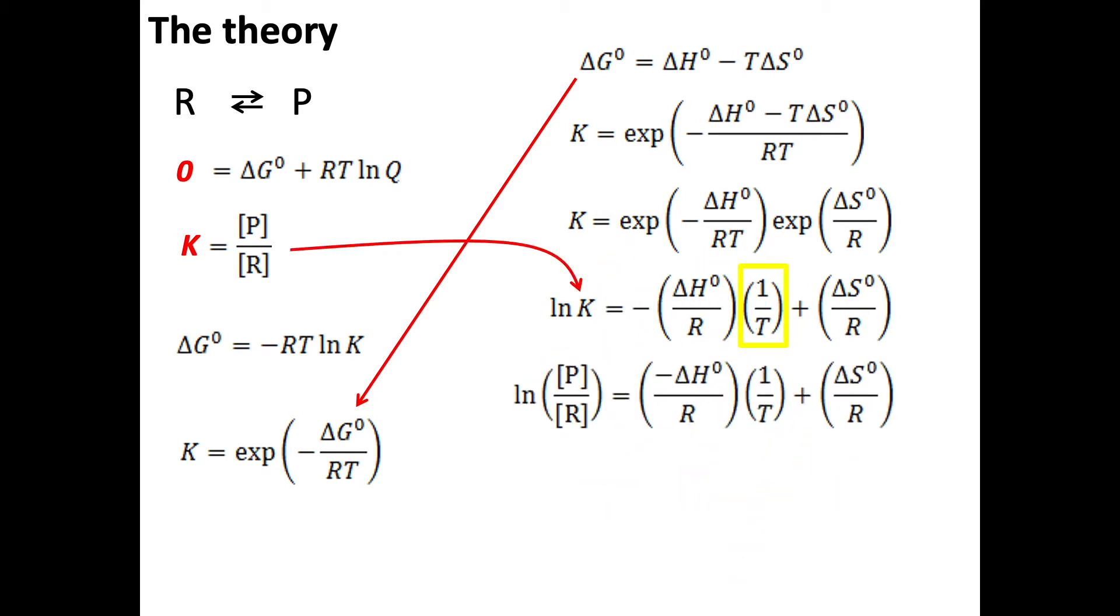If you have a little mathematical insight, you will see that in this form Y equals M times X plus B. In other words, if we plot the log of the ratio of the product and reactant concentrations as a function of 1 over temperature, we will get a straight line. The slope of which is equal to minus the change in enthalpy over R, and the intercept of which is equal to the entropy change over R.